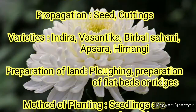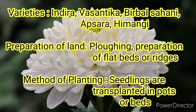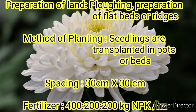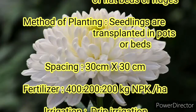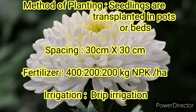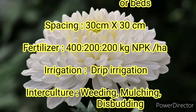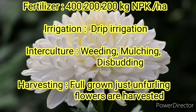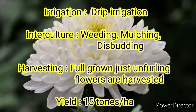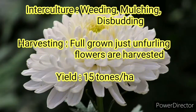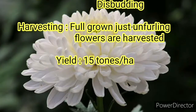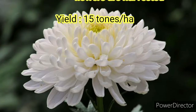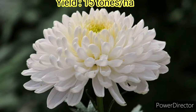Preparation of land can be done by plowing and preparing flatbeds or ridges. In case of method of planting, seeds are transplanted in pots or beds. Spacing should be 30cm x 30cm and the fertilizer dose is 400 x 200 x 200 kg NPK per hectare. Irrigation is done by drip irrigation and interculture is done by weeding, mulching, and disbudding. Harvesting is done when the flowers are fully grown and the yield is 15 tons per hectare.